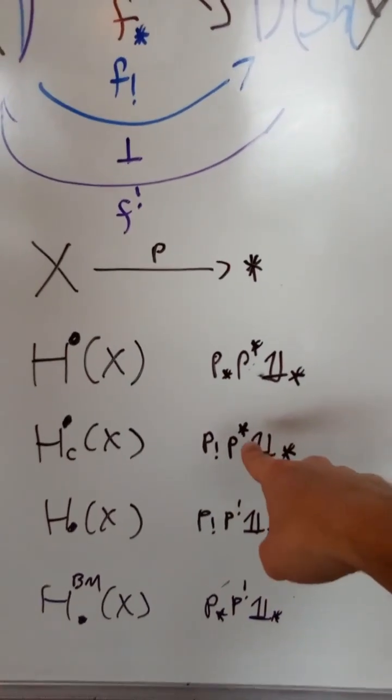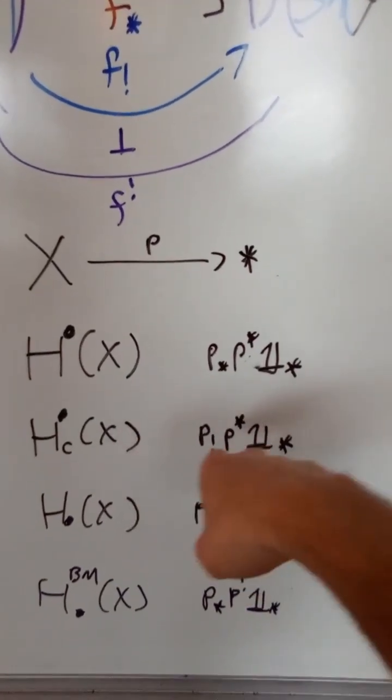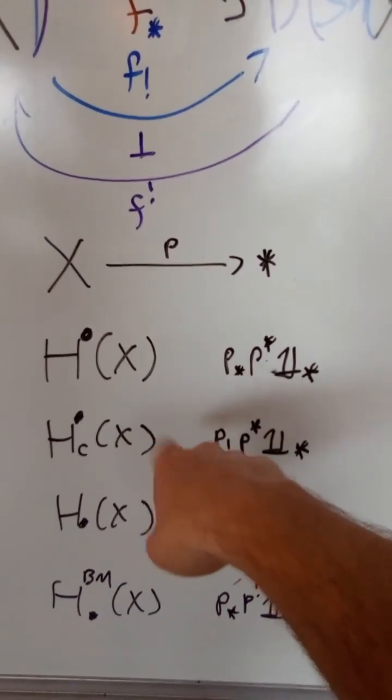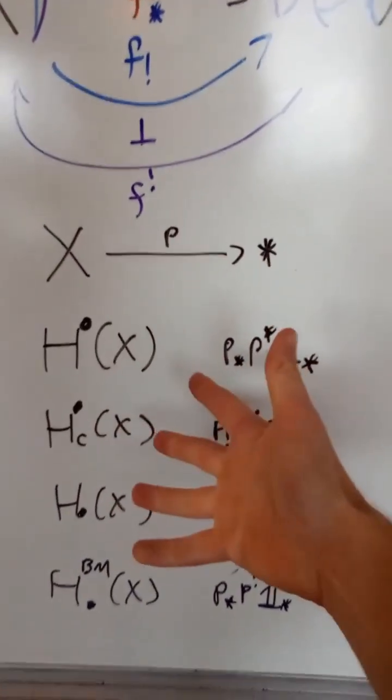If instead, after pulling, we take the push forward with compact supports, we recover a complex that gives us the cohomology with compact supports.